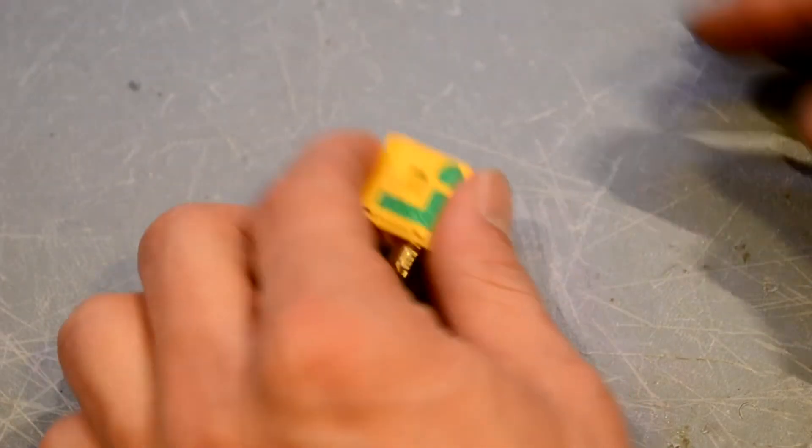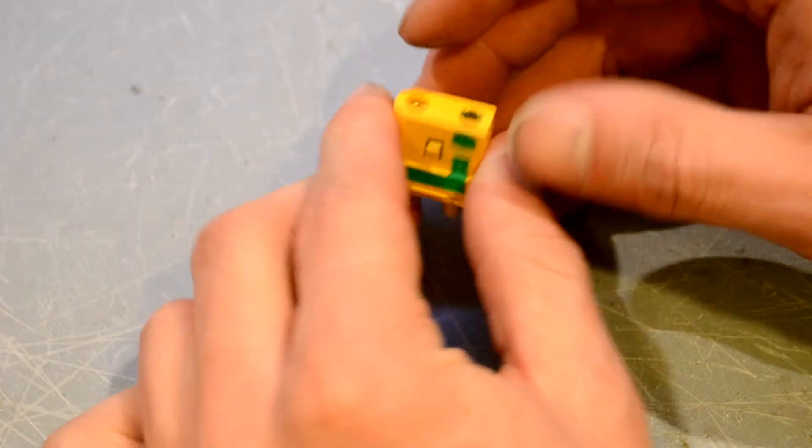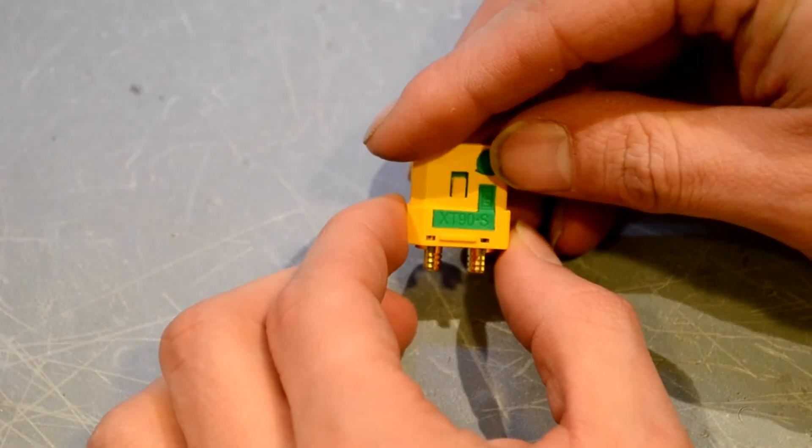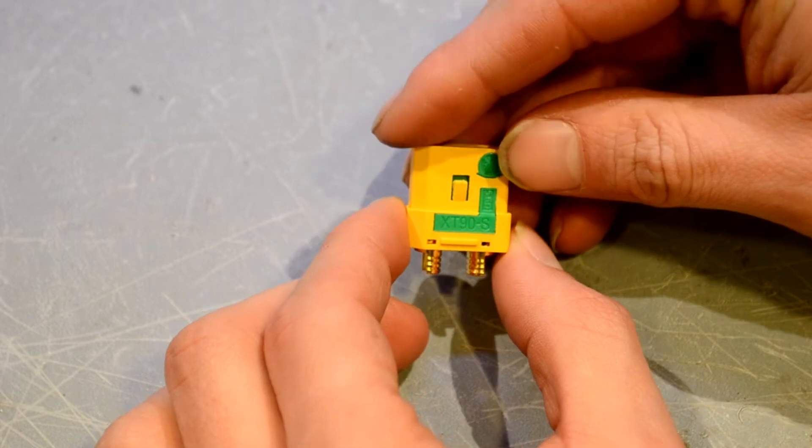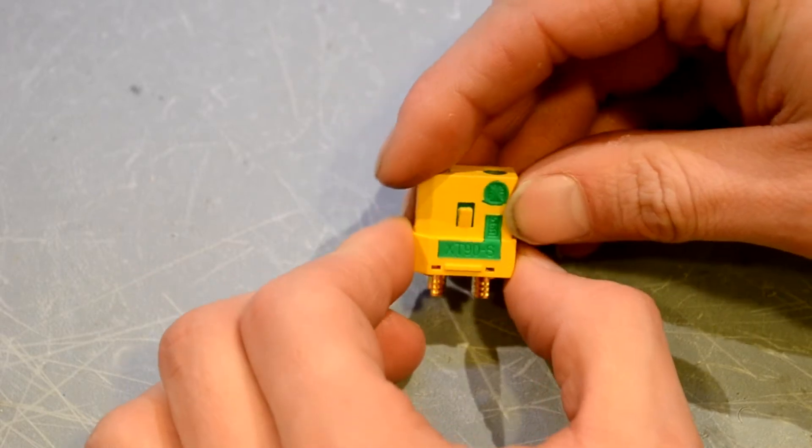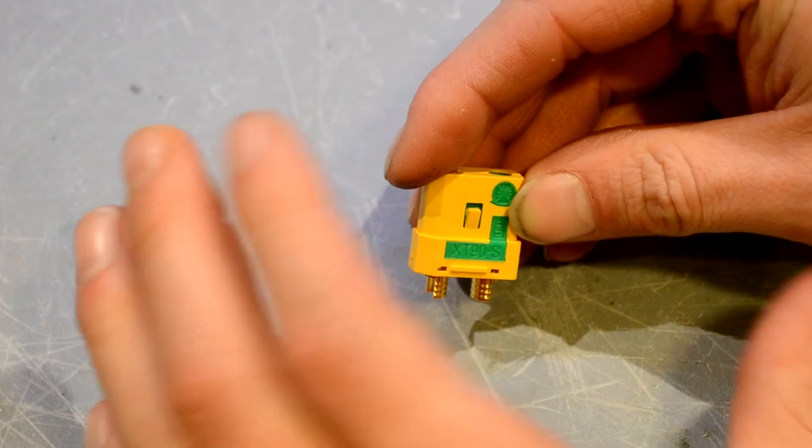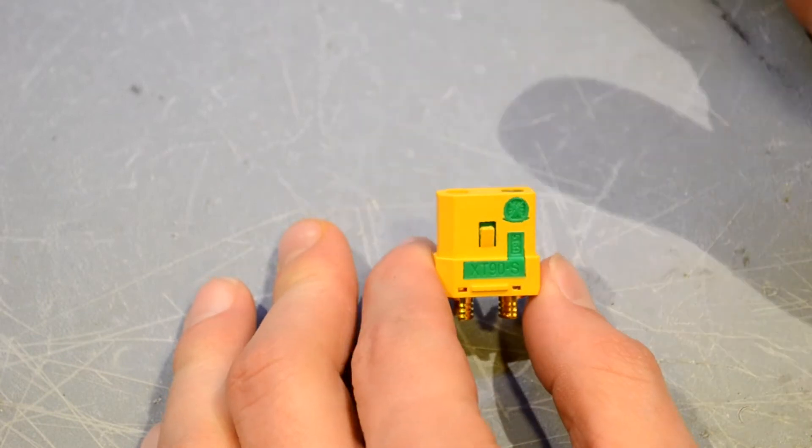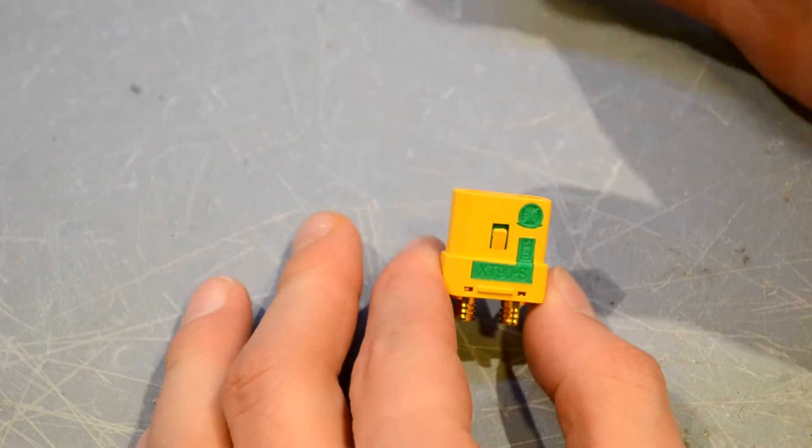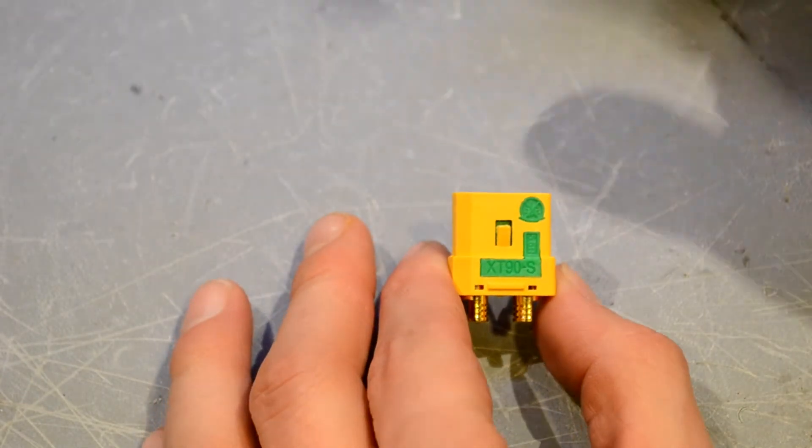So guys, anti-spark connectors like this XT90 right here. I'm sure you guys have seen these before. They are pretty common for large multi-rotor builds, 6S and beyond. I mean, some people even use them for 4S.